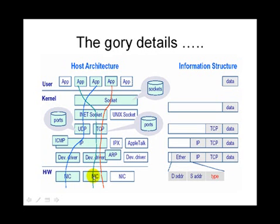First, the network interface card receives the packet and pushes it up to the device driver. At this point the ethernet header, the IP header, the TCP header, and the data are all present. The device driver is going to strip the ethernet header and pass the packet up to the IP layer, which receives just the IP header, the TCP header, and data. The IP layer, depending on whether the communication is TCP or UDP, passes just that header along with the data to the upper layer. As the packet moves up, the IP header is also lost.